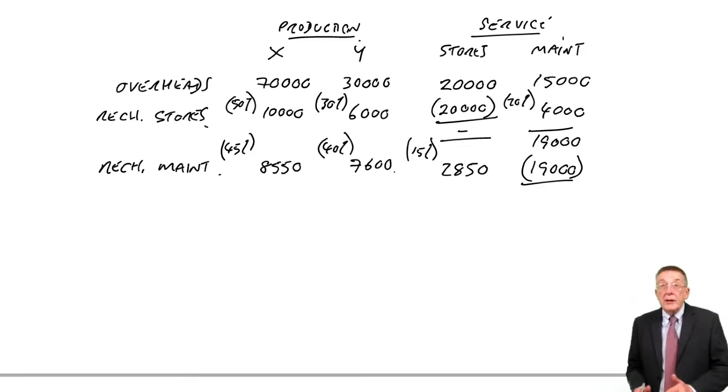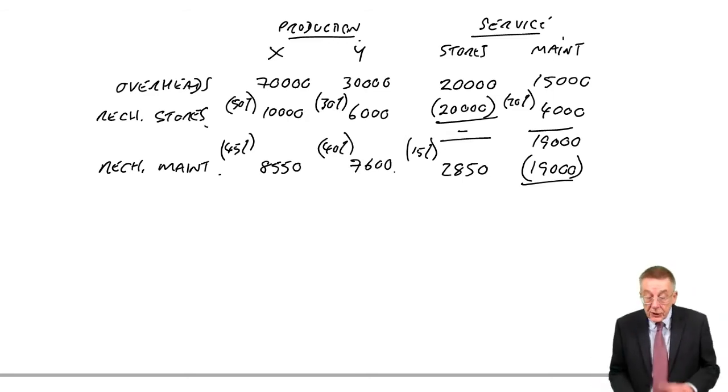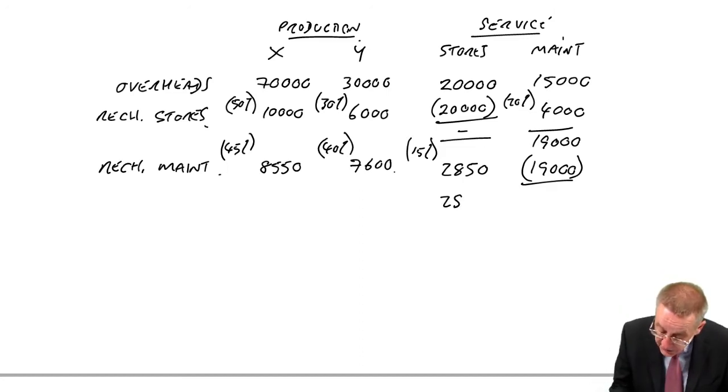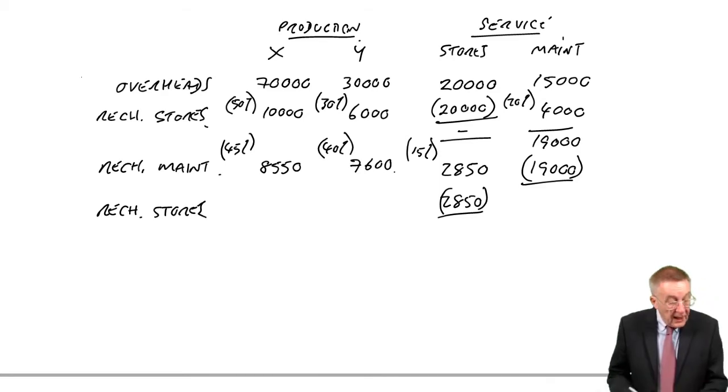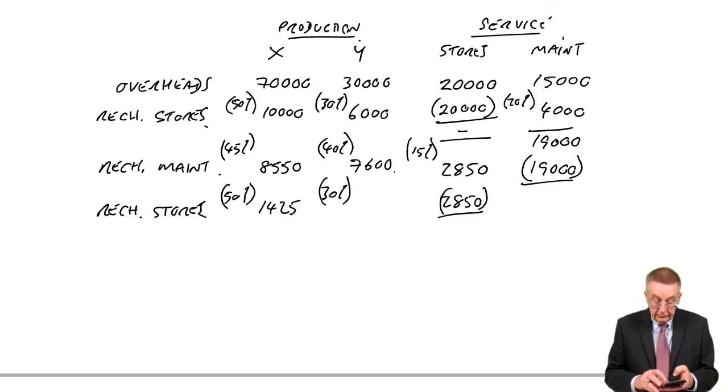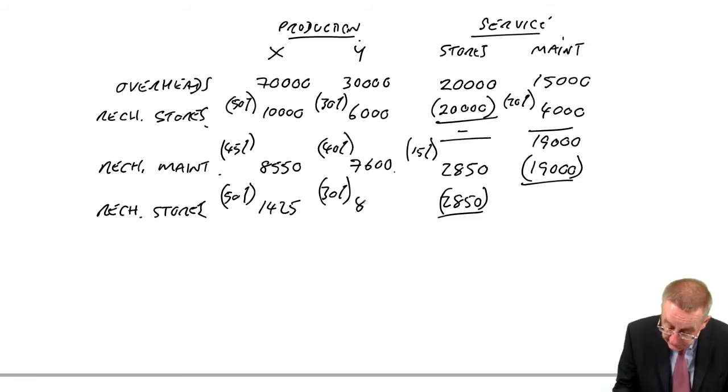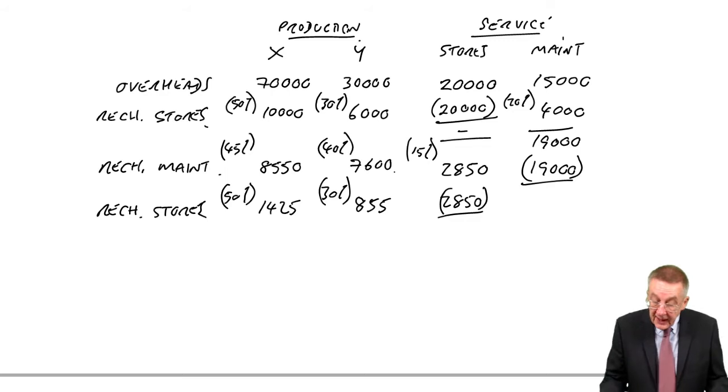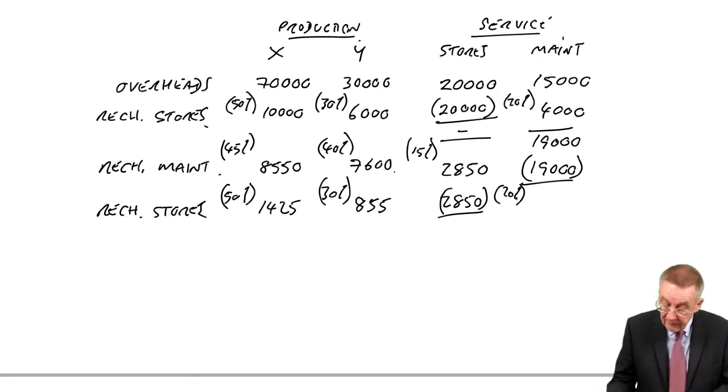So 45%, 8550 to X, 40%, 7600 to Y, and 15%, 2850 to stores. And of course, we've got a problem. Although we've now recharged maintenance, stores has reappeared with 2850. So we're going to have to recharge that 2850, recharge to the other departments.